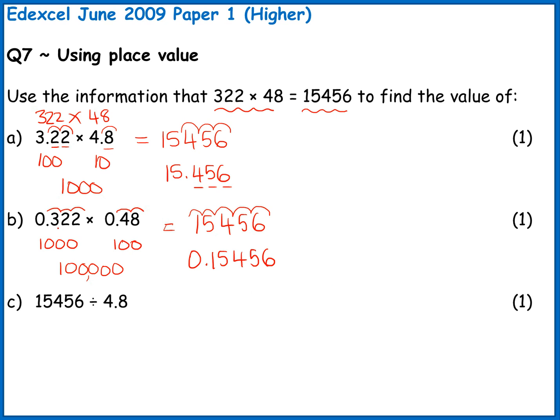And again we can use the place counting trick. So I've got 1, 2, 3, 4, 5 in my question. Counting from the right, 1, 2, 3, 4, 5 in my answer.